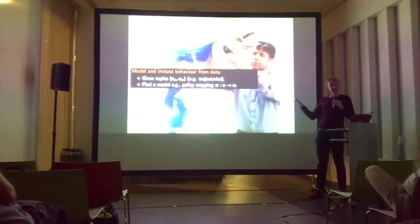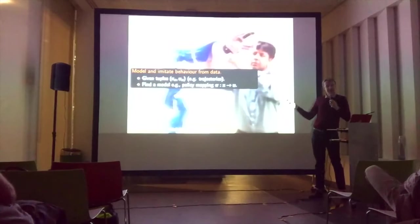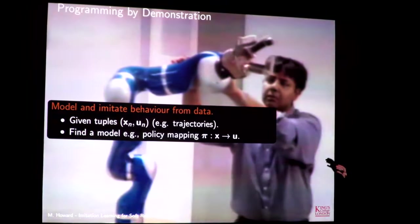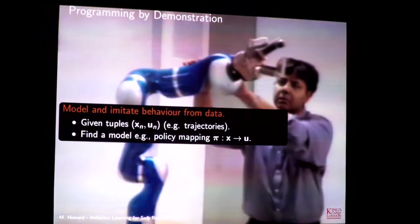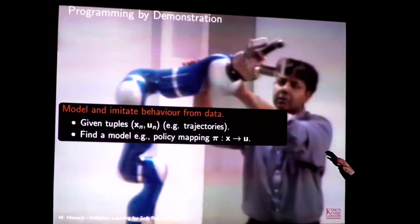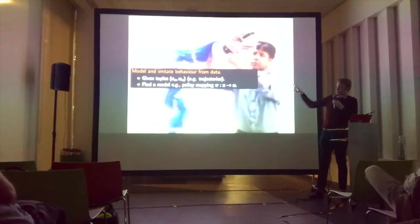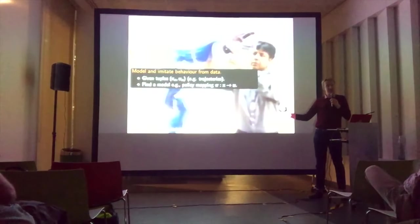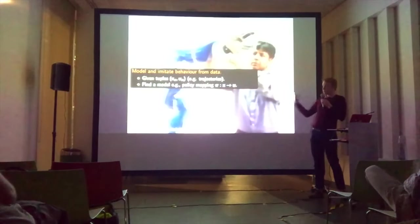So enough about that. What I really wanted to talk to you about today was this imitation learning programming by demonstration paradigm. So this is the standard setup for programming by demonstration is that you have some set of data which contains states and actions, for example, trajectories. And what we want to do is we want to find some kind of policy mapping that tells us, well, given some state of the world, what are the controls that we ought to apply at that time?